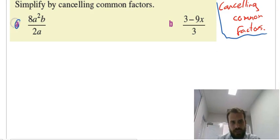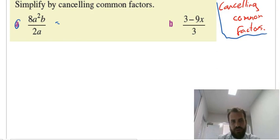Here's a question here: 8a squared b over 2a. So the way that I'm going to cancel these out is first to deal with the coefficients, the numbers out the front. So 8 divided by 2, that's going to leave a 4 on the top. 8 divided by 2 is 4.